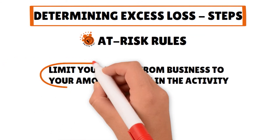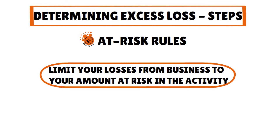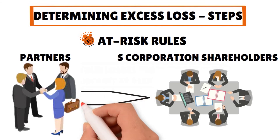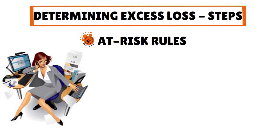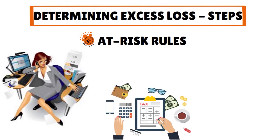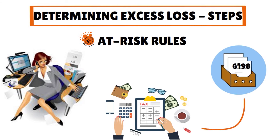At-risk rules limit your losses from business to your amount at-risk in the activity. These at-risk limits apply to partners and S-corporation shareholders and certain closely-held C-corporation owners. At-risk rules also apply to specific types of business. If your business is a sole proprietor or a single-member LLC filing your business tax return on Schedule C, you'll need to use IRS Form 6198 to compute and report your at-risk situation.